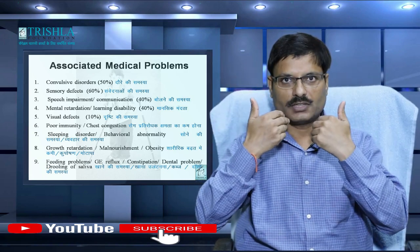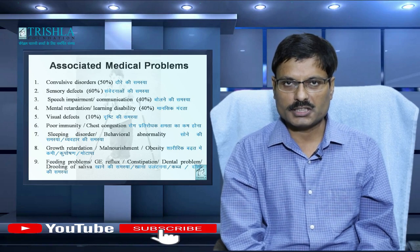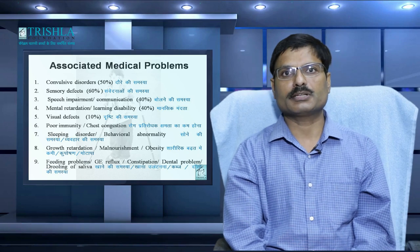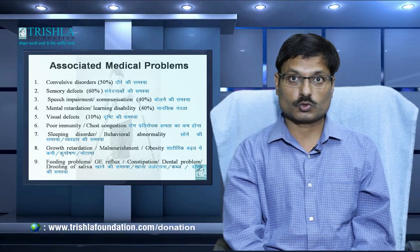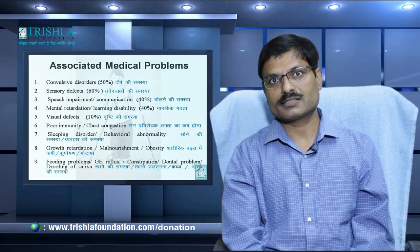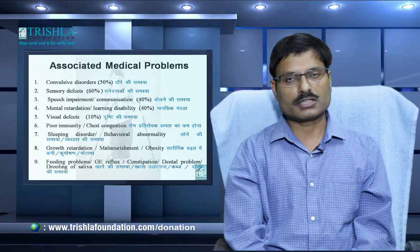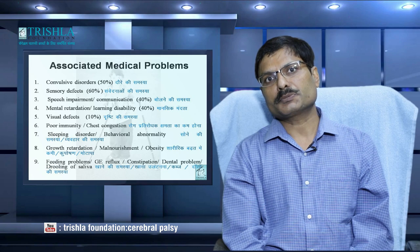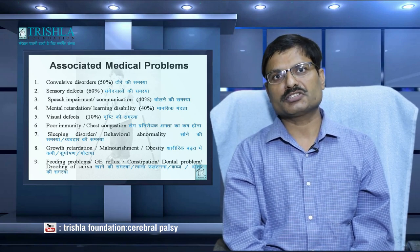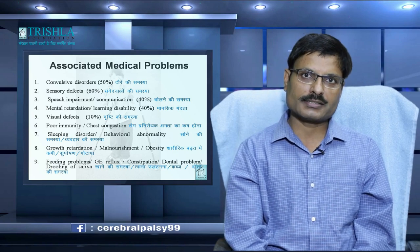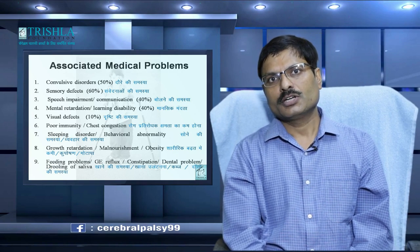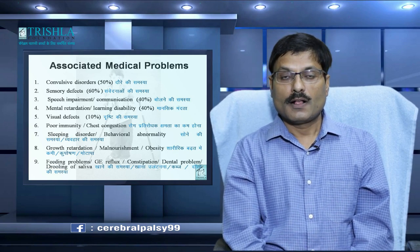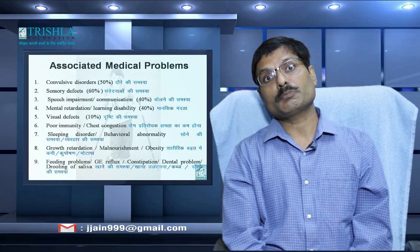60% of children will have sensory problems — sensory problem means different sensations going through the body: touch, temperature, vision, auditory, taste, and also balance — the proprioceptive receptor. All sensory issues should primarily be treated to manage the physical disability of the child. The third common problem is speech impairment. Because of this, communication becomes very difficult. Speech problems occur in 40% of children and should be managed from the age of one to two years so that early speech intervention can give good outcomes in the long term.